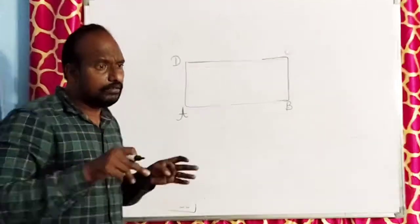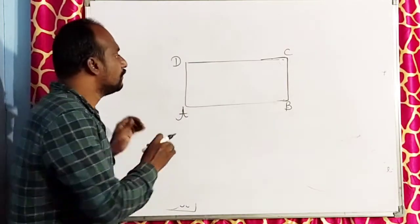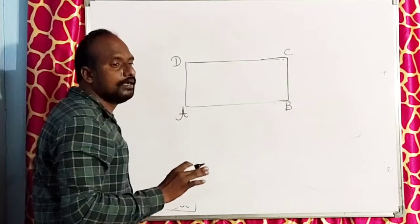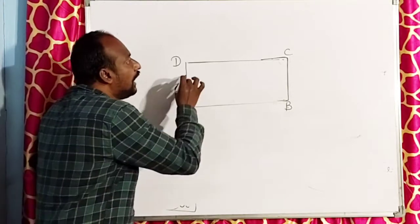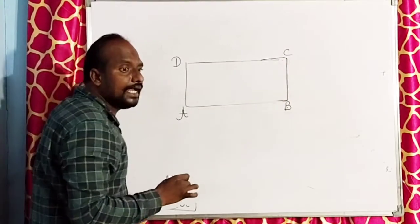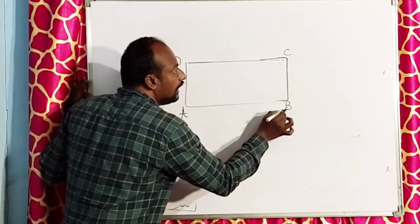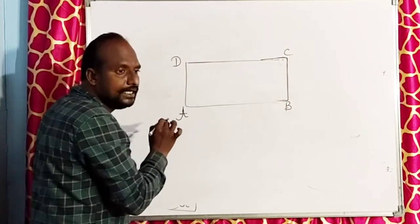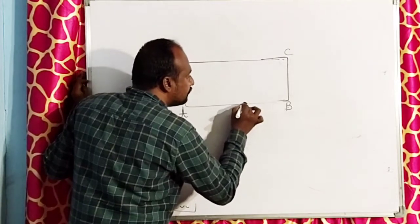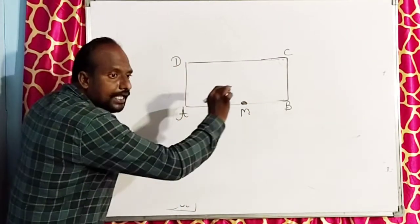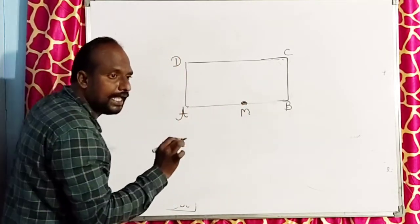Take a drawing board which is covered with white chart. Place the glass slab at the middle of the white chart. Draw the outline of the glass slab. Name the vertices A, B, C, D. Now mark the point M on AB.